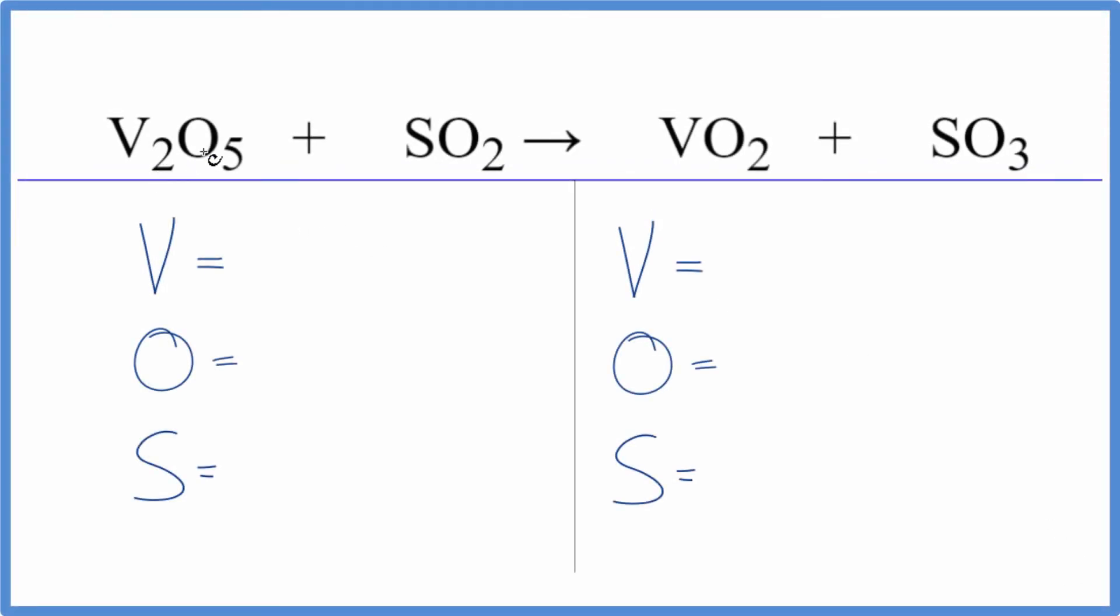To balance this equation, V2O5 plus SO2, let's count the atoms up on each side.